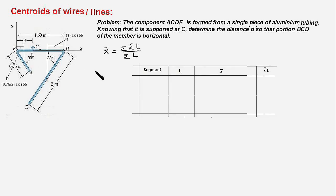Let us take first segment AB. Its length is 0.75 meters, and its centroid would be the center point of AB, so this is 0.75 upon 2. This angle is 55 degrees, therefore this length would be 0.75 upon 2 times cosine of 55 degrees, and that is the X coordinate of the centroid of the segment AB. Our origin is point B.